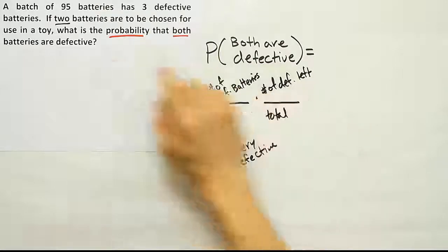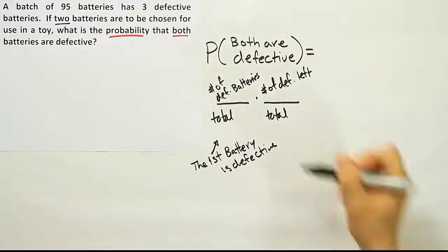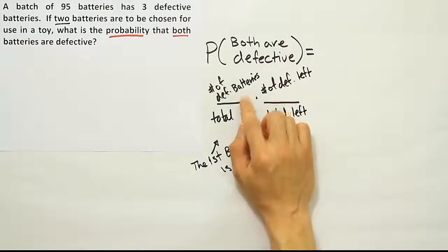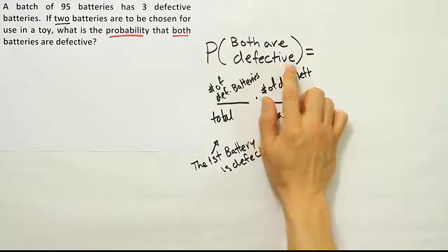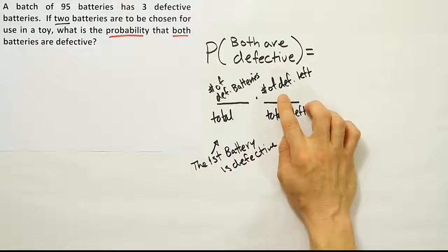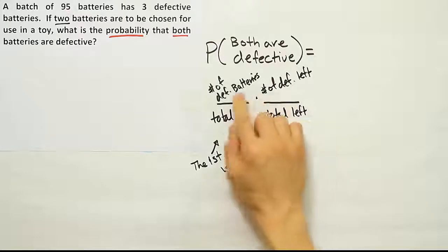Why do I say the number of defective batteries left? Because the two batteries are chosen for use in a toy, so we have to think about whether this is sampling with or without replacement. This is clearly sampling without replacement. I take the first battery, put it into the toy, then go back and get the next battery — that battery is not going back into the batch. So my total has been reduced; it's the total left in the batch. The number of defectives will also be less, because I'm assuming the first battery I took was defective. When doing dependent probability, you have to assume the first case turned out how you expected — in this case, defective. So the second fraction is the number of defective batteries left over the total number of batteries left, assuming I took a defective battery on the first selection.